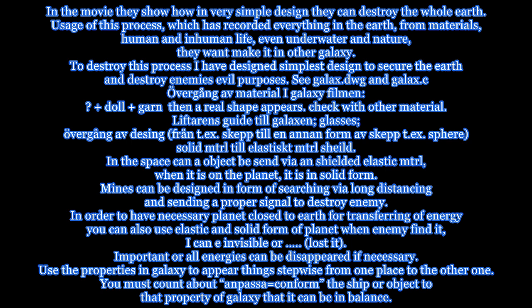Solid material to elastic material, shield. In space, can an object be sent via shielded elastic material? When it is on the planet it is in solid form. Mines can be designed in the form of searching via long distance and sending a proper signal to destroy the enemy, in order to have a necessary planet close to earth for transferring of energy. You can also use elastic and solid form of a planet — when the enemy finds it, it can become invisible or disappear. All energies can be disappeared if necessary. Use the properties in the galaxy to appear things stepwise from one place to another.